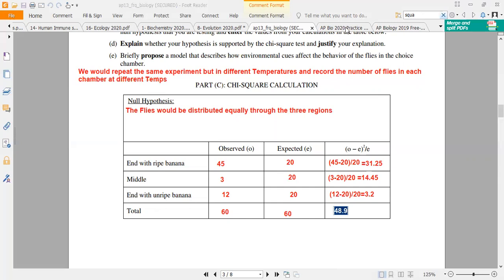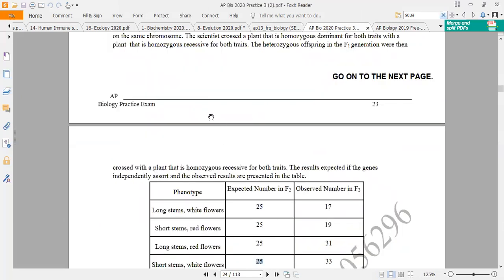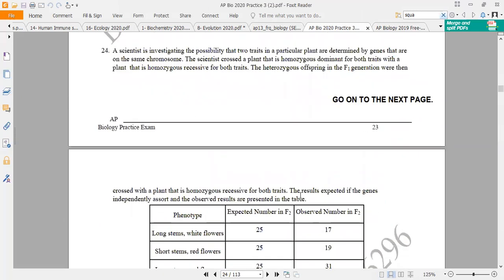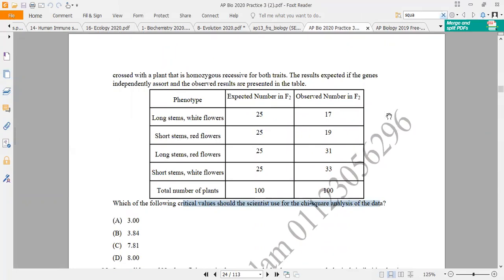He also gave me a test asking about the critical value. Which of the following critical values should the scientists use for the Chi-square analysis of the data? The null hypothesis is that all the phenotypes will have equal numbers. The formula is observed minus expected, squared, divided by expected.